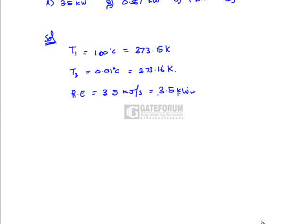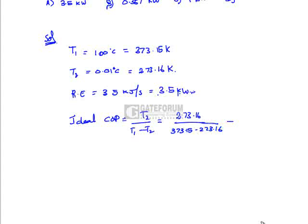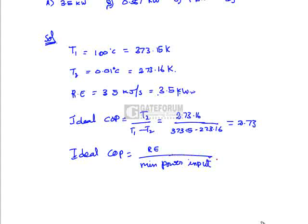The ideal COP is given by T2/(T1 − T2) = 273.16/(373.15 − 273.16) = 2.73. COP also equals refrigerating effect divided by minimum power input. With refrigerating effect of 3.5 kW and COP of 2.73, the minimum power input is 1.28 kW. The correct answer is option D.